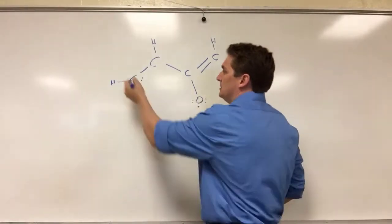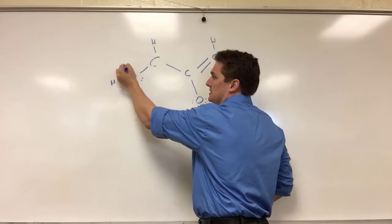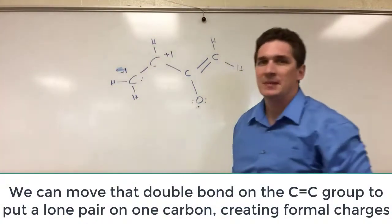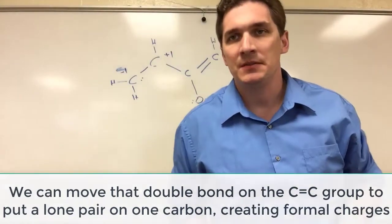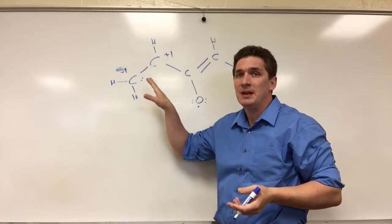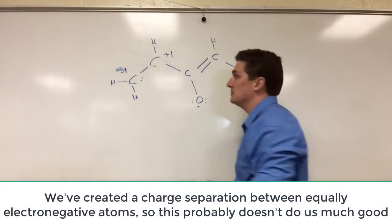Now because we've added an extra electron to carbon, it normally starts with 4, we see 5 in its coordination sphere. This is a negative 1 and this is a plus 1. Does this make sense in terms of a stable resonance structure? Well, the answer is no because we've created a charge separation where we didn't have one before. But this would be a possible resonance structure.